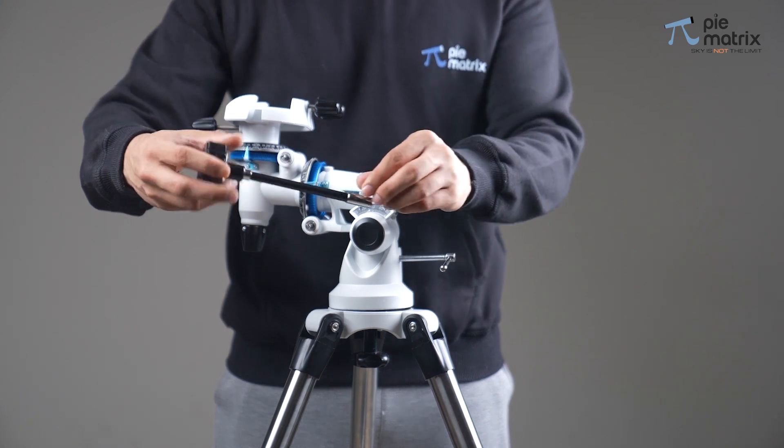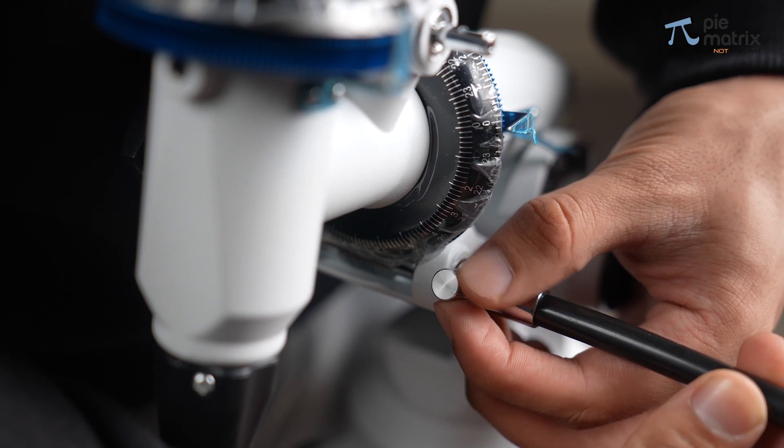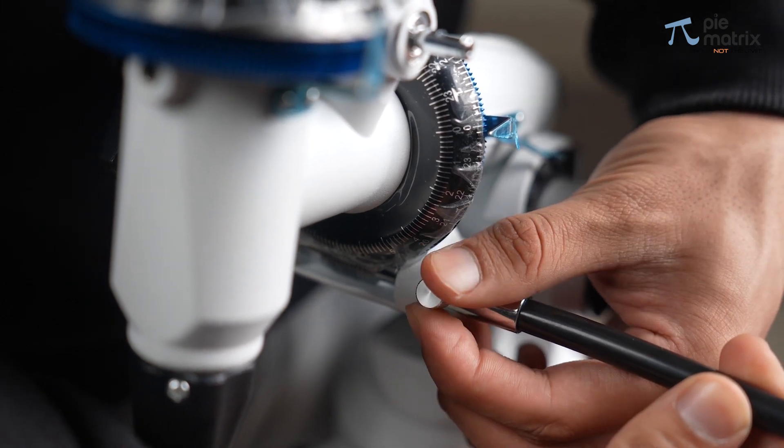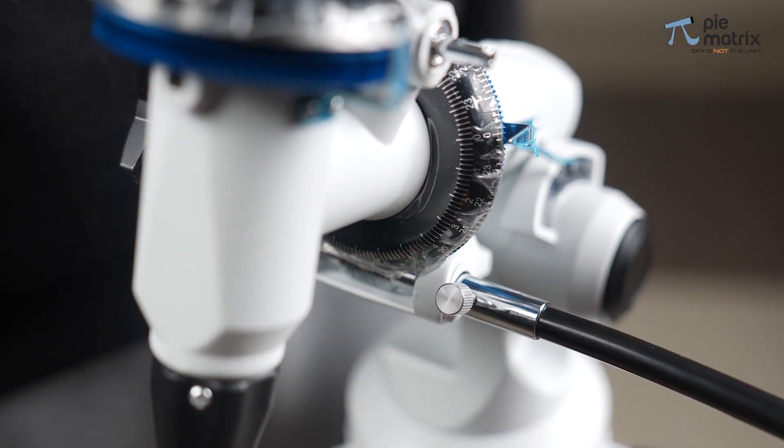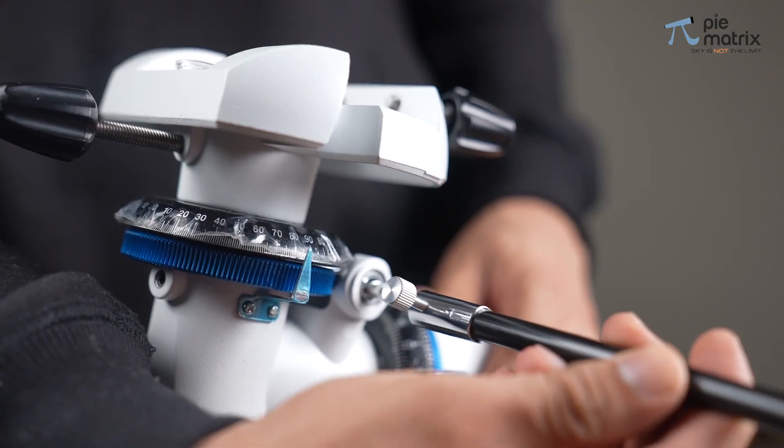Now we install the slow motion knobs. The first slow motion knob goes into the RA axis and the second one into the DEC axis.